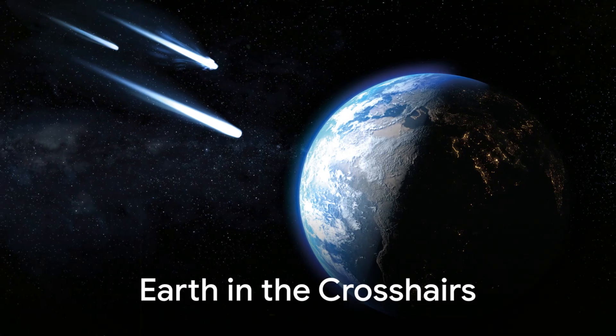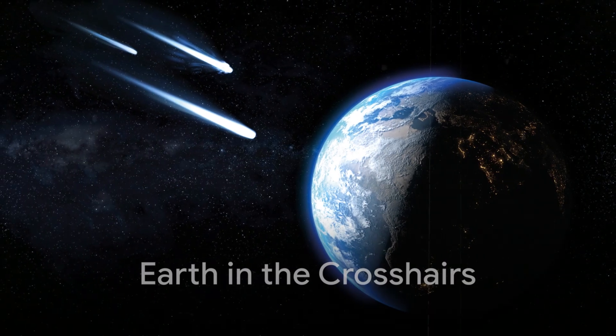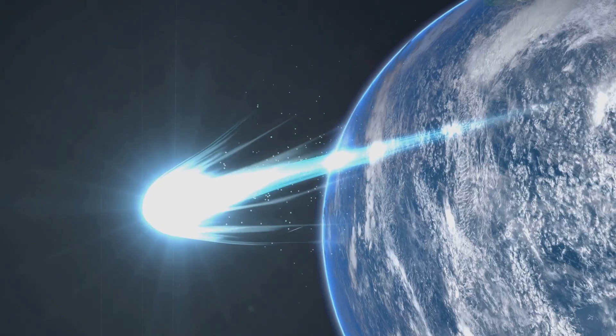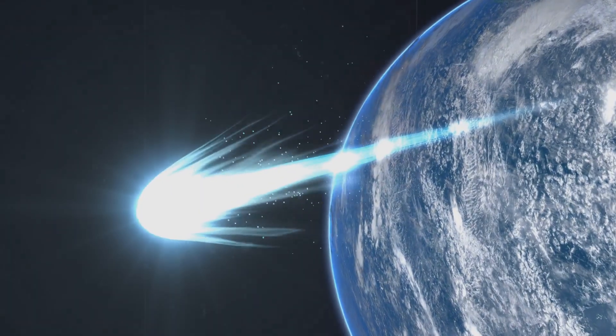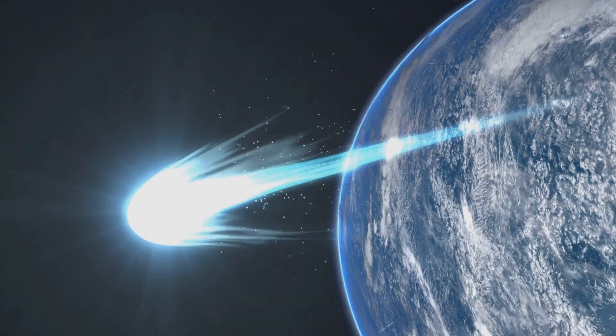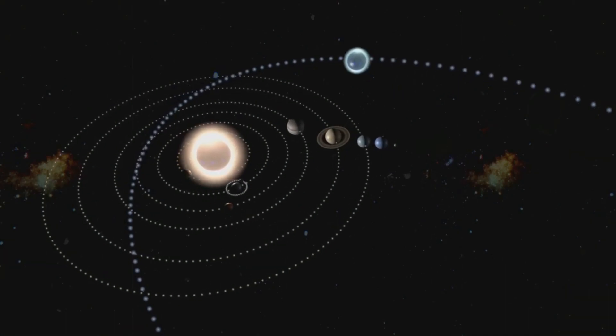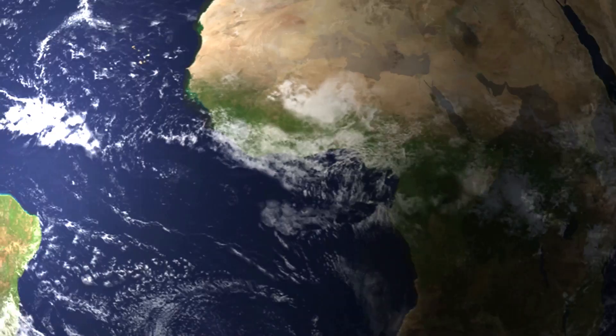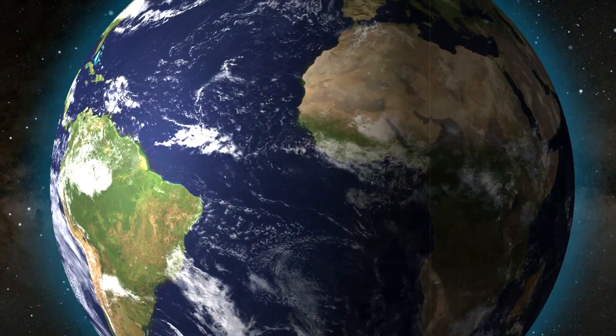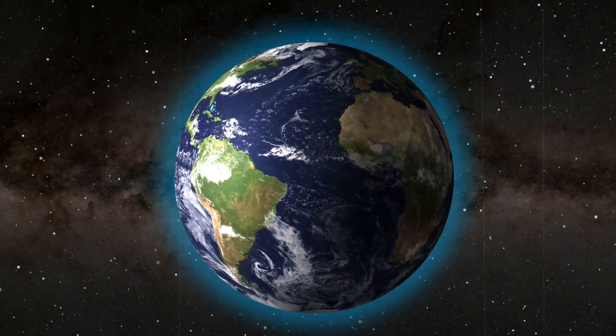At the same time, Earth itself is caught in the geometry of their passage. One comet will slide to within just over 37 million kilometers of the planet. Another will trace its path along the ecliptic plane, the very highway where the planets orbit. Such alignments mean Earth and its magnetic shield may feel the subtle brush of their plasma.